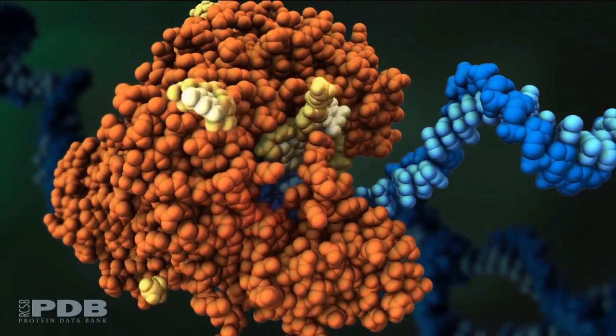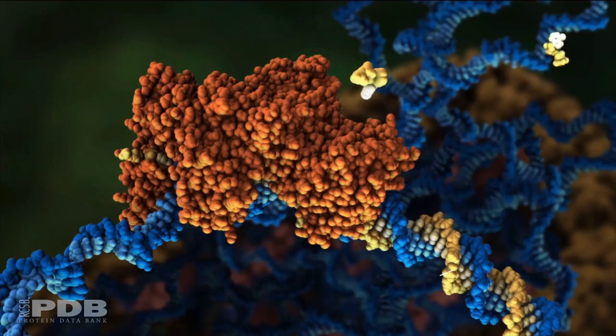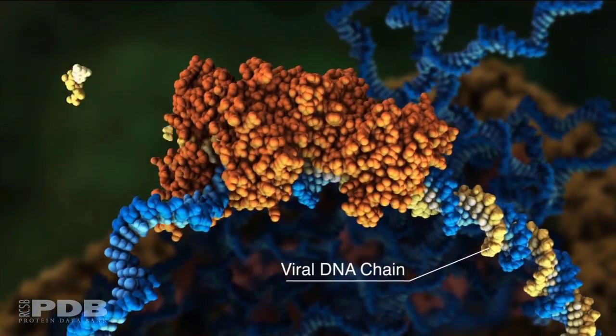When reverse transcriptase finishes this strand, it will replace the original viral RNA with another DNA strand, forming a DNA double helix.